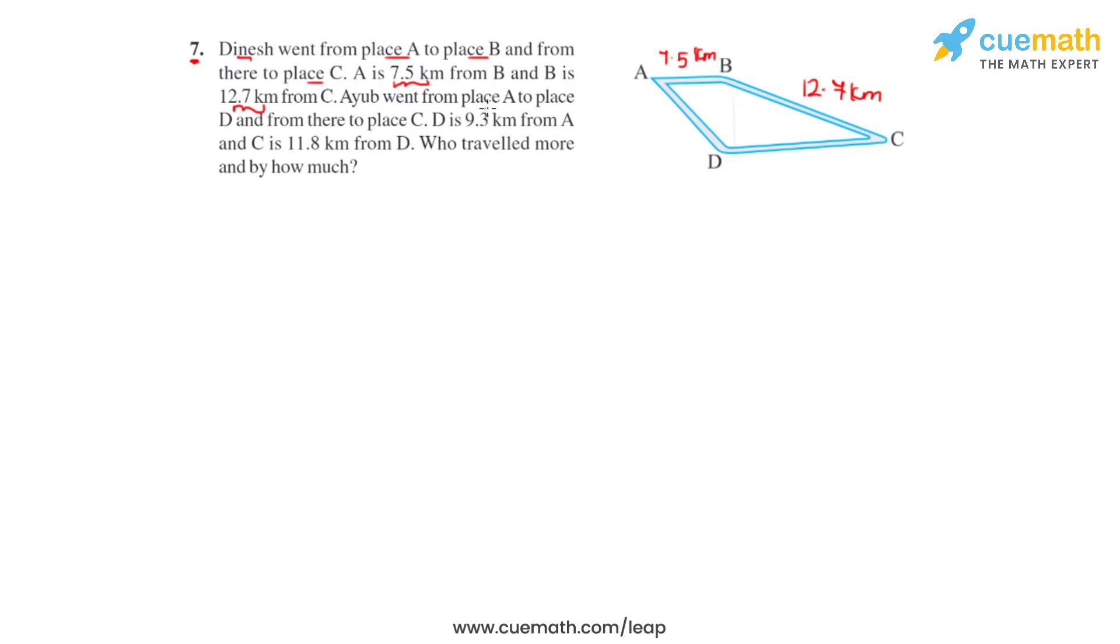Now Ayoub went from place A to place D and from there to place C. D is 9.3 kilometers from A and C is 11.8 kilometers from D. So again in the figure we can write the distance between A and D as 9.3 kilometers and the distance between point D and C as 11.8 kilometers.